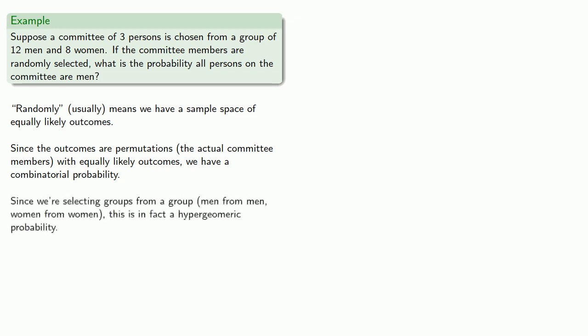And further, since we're selecting groups from a group, men from men, women from women, this is in fact a hypergeometric probability.